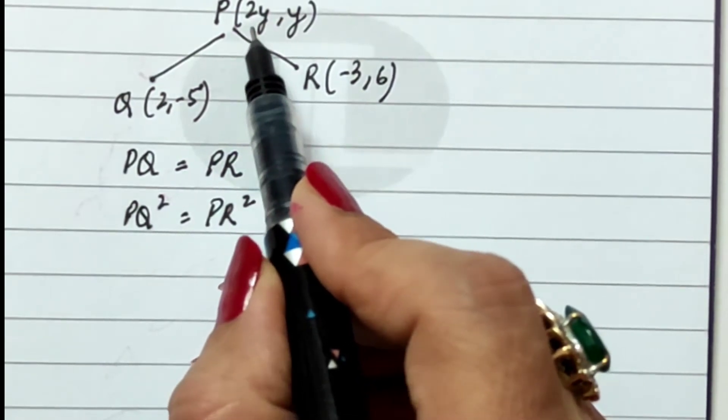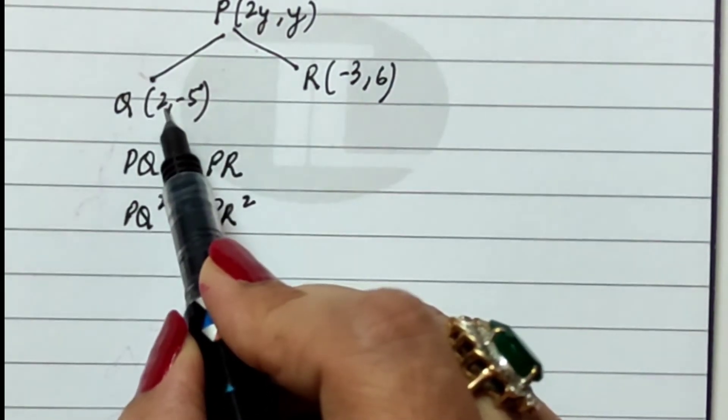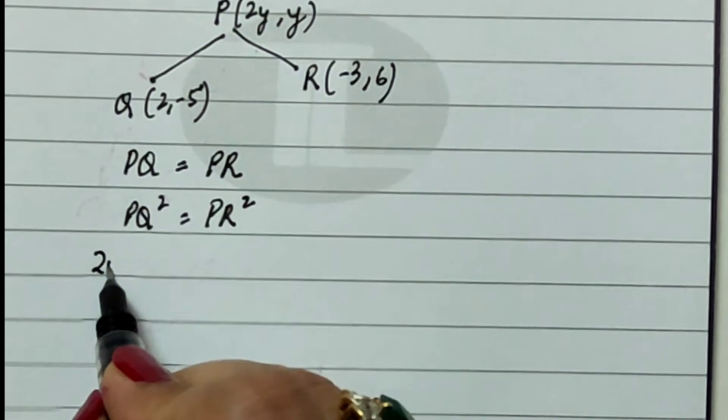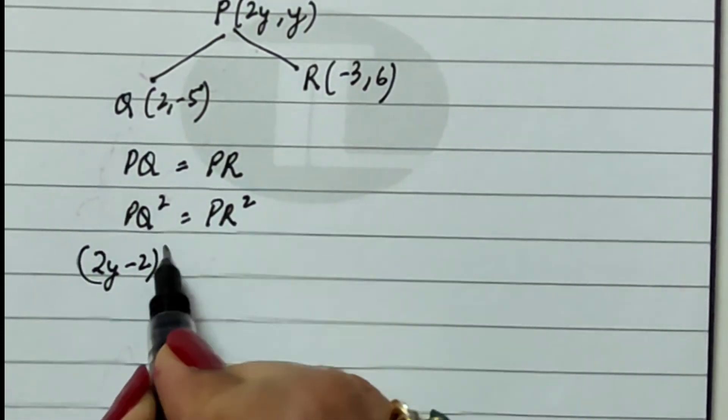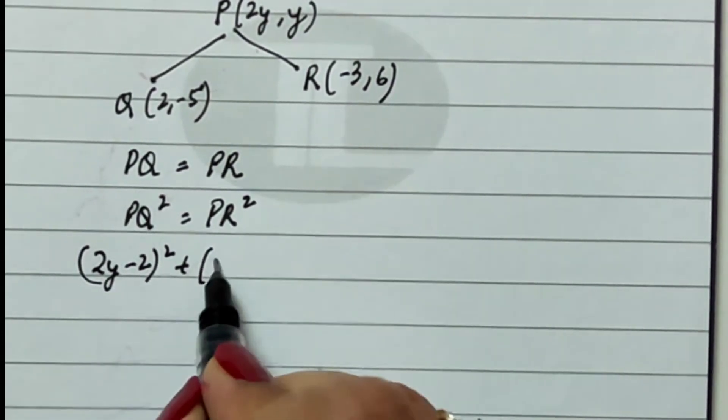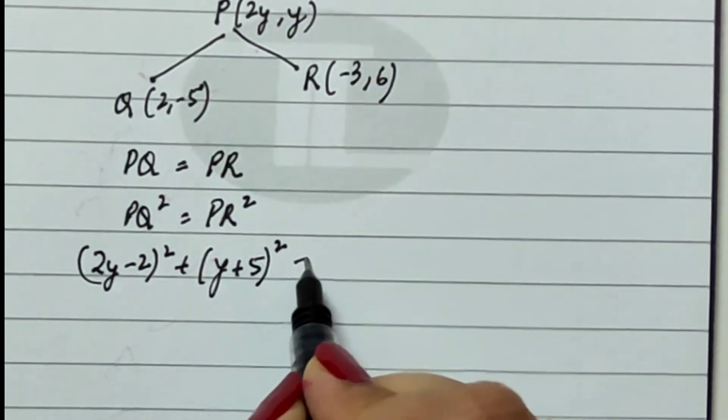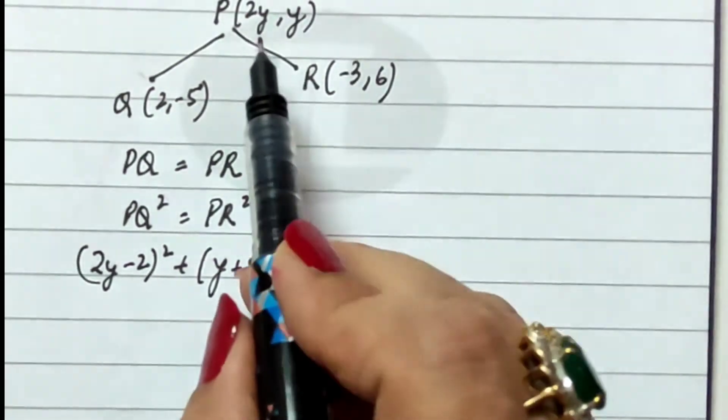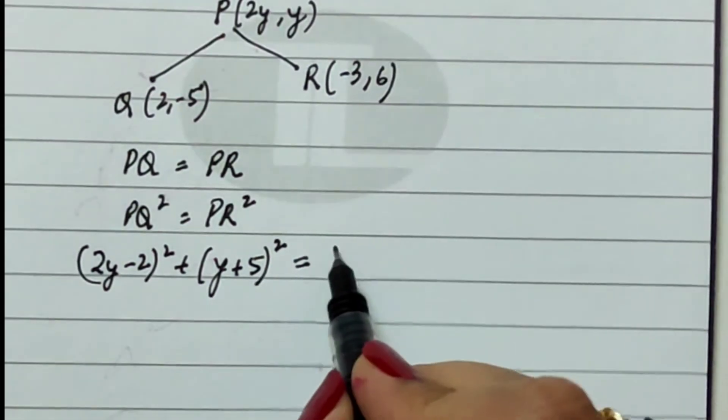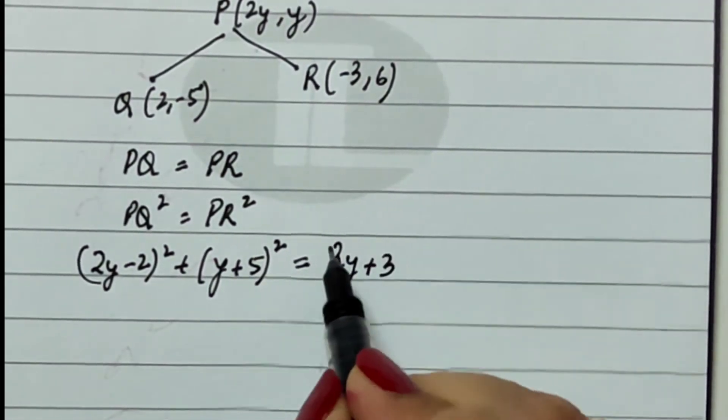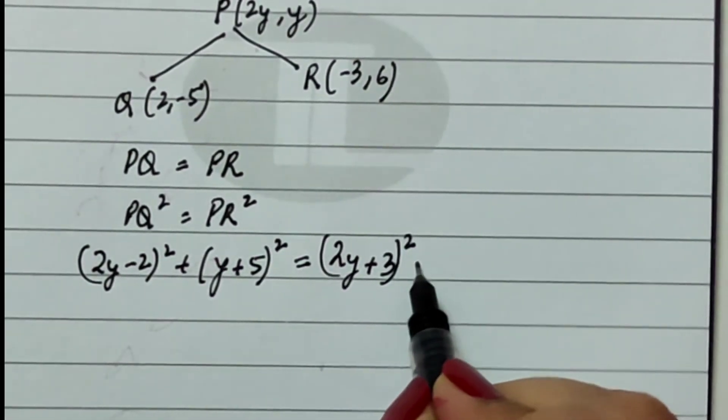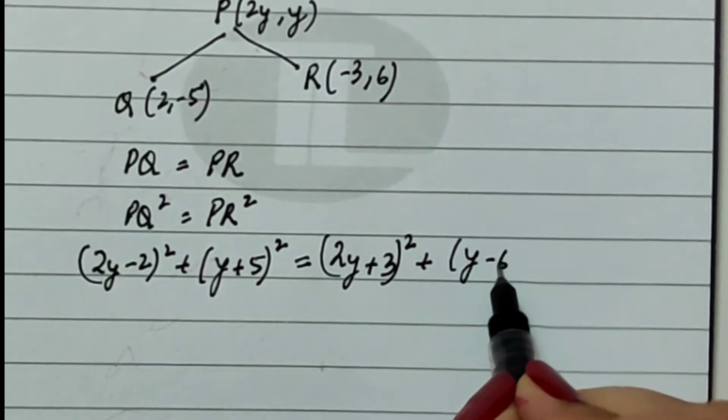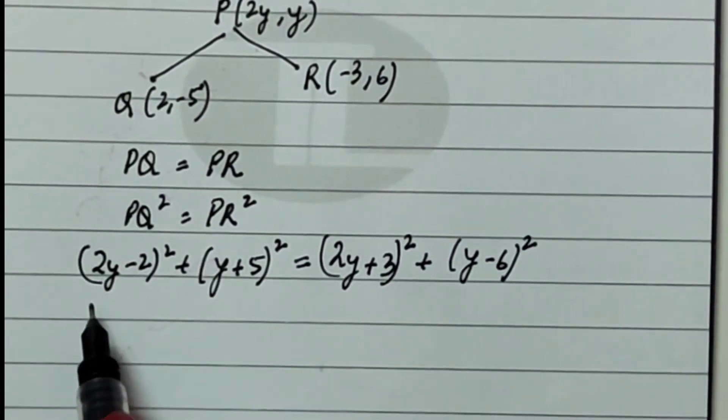That means PQ² is equal to PR². Which also means that what is PQ? PQ will be equal to (2y-2)² + (y+5)². This is equal to how much? It is equal to (2y+3)² + (y-6)².